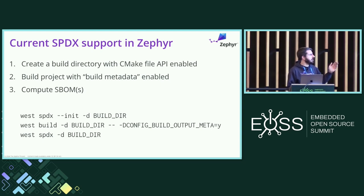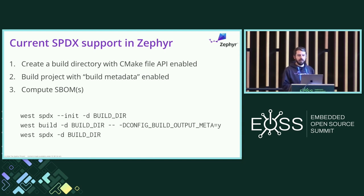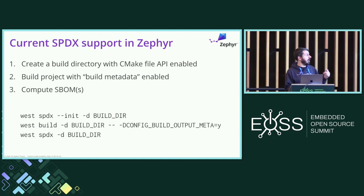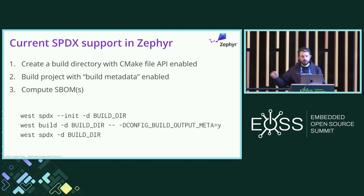First, prior to building, you give a hint to west and CMake under the hood that you want to instrument your build. It's opt-in because it may slow your build slightly. It uses the CMake file API — telling CMake ahead of time to give lots of information about all the compilation units being pulled into the build, their dependencies, whether they come from git or elsewhere. Then you build the project as usual with an extra option to capture even more metadata.